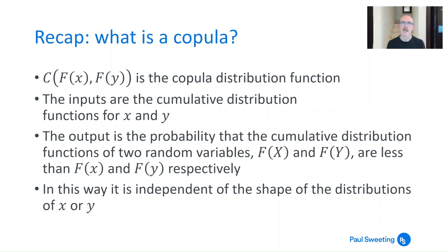And in this way it's independent of the shape of the distributions of x or y. So this is a really important part about copulas: the inputs to them are distribution functions, they're uniform distributions and all of the characteristics of the marginal distributions, the shape of those distributions has been stripped out. Just the order of the observations, that's all you're worried about.